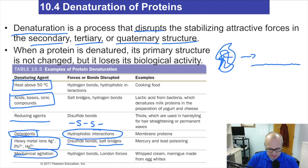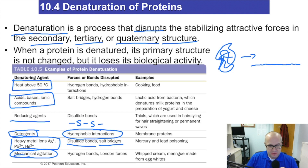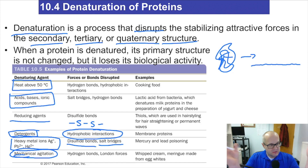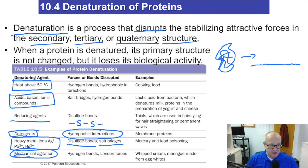Mechanical agitation — whipped cream, lemon meringue pie, all that kind of stuff. You just denature proteins that way, basically by injecting or forcing air into them, and it just pushes them all apart. I think that's kind of neat.